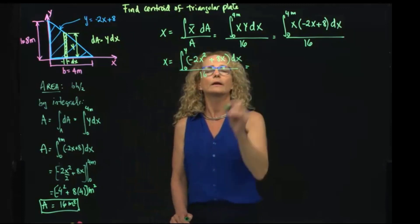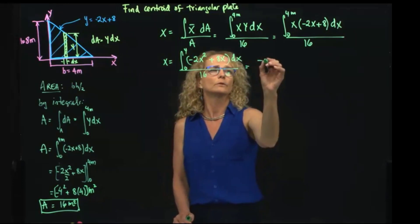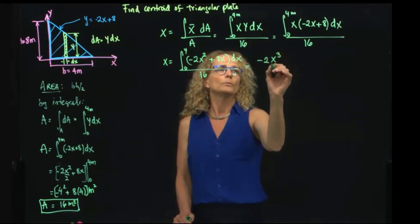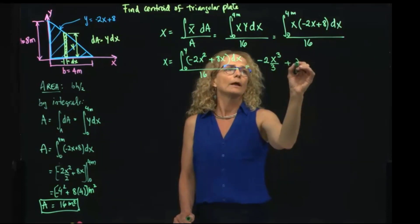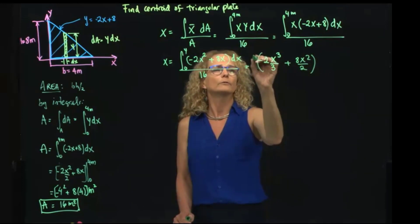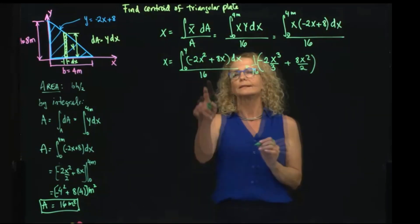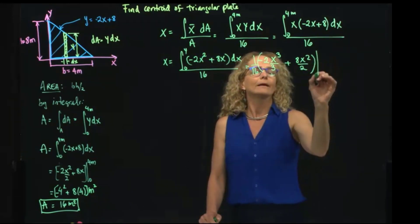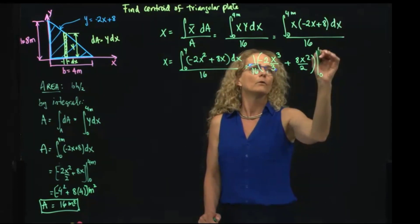X will be equals to the integral from 0 to 4, negative 2X squared plus 8X dX divided by 16. Now we can integrate this polynomial, which is very easy to integrate. Negative 2X cubed over 3 plus 8X squared over 2, all that pre-multiplied by 1 over 16, evaluated between 0 and 4 meters.